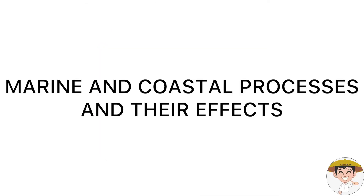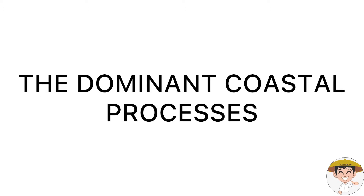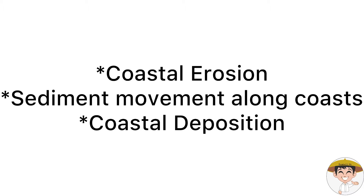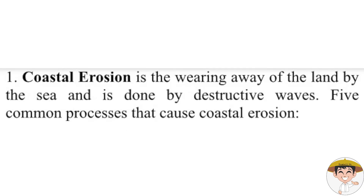Now let's talk about marine and coastal processes and their effects. We have three dominant coastal processes: coastal erosion, sediment movement along coasts, and coastal deposition. First, we have coastal erosion — this is the wearing away of the land by the sea, and is done by destructive waves. There are five common processes that cause coastal erosion.